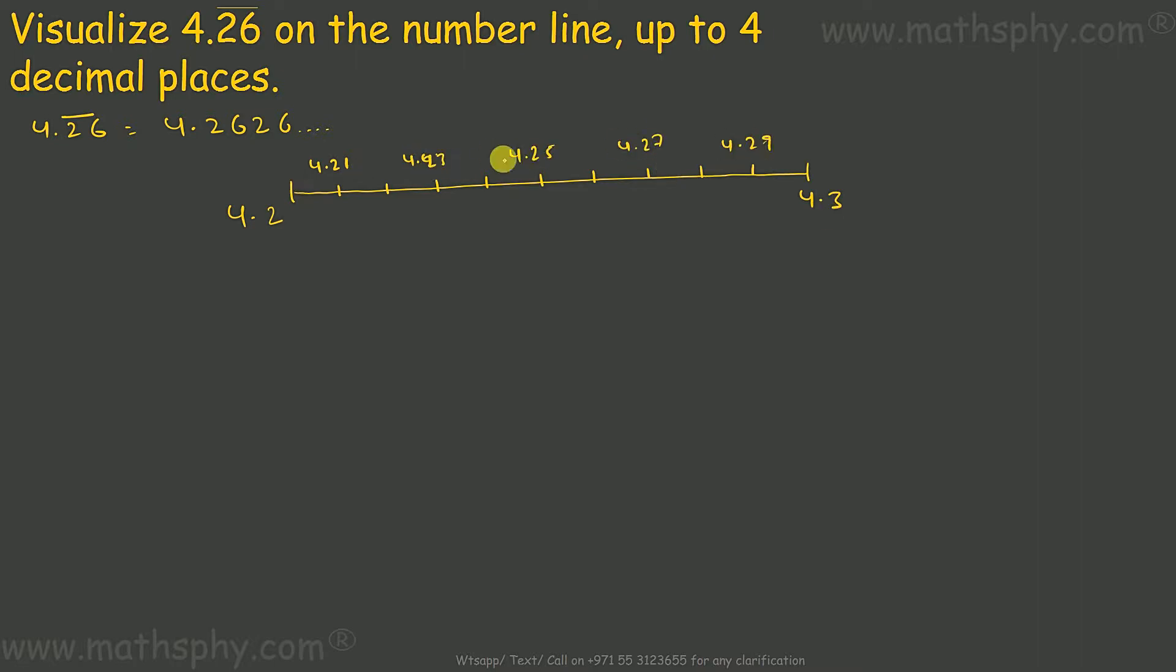I'm not writing all the numbers because we don't have much space here. Now, 4.2626 means we have to look between 4.26 and 4.27. So let's zoom this portion here. 4.26 and 4.27. Okay, so this will be 4.261. 4.2626 will fall between 4.262 and 4.263.